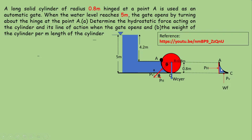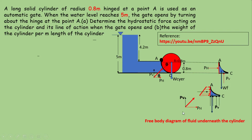pH acts on the vertical plane and pV acts on the horizontal plane, with weight of the fluid enclosed within this area also considered. Consider the free body diagram of fluid underneath the cylinder. pH is the horizontal component and pV is the vertical component. Since it is a vertical plane, pressure varies from point to point as we move down — pressure increases as indicated in the pressure diagram.